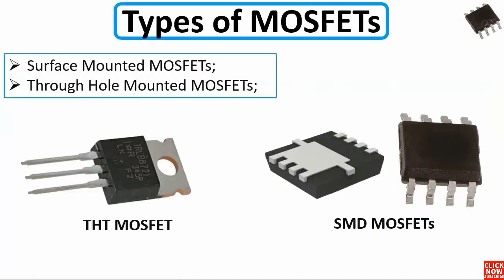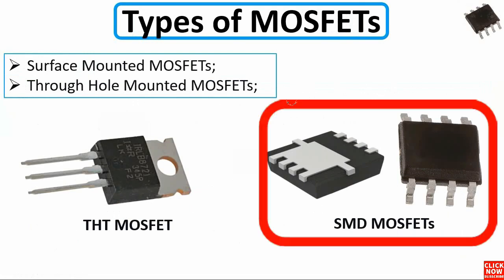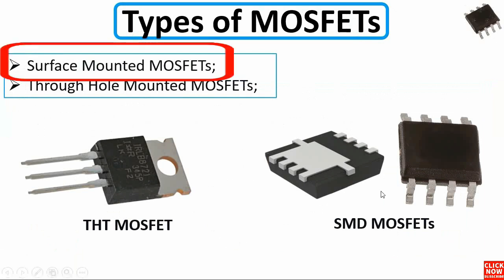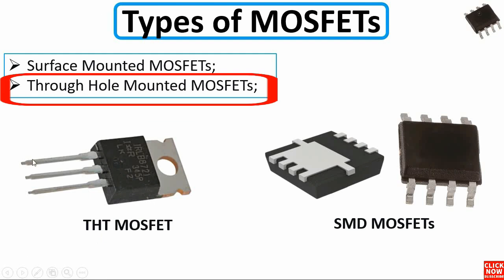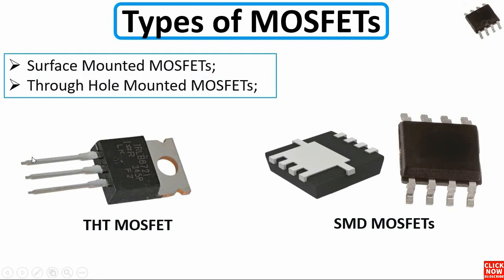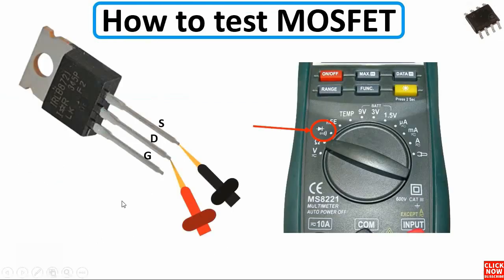As you can see, we have two kinds of MOSFETs. We have SMD MOSFETs or surface mounted MOSFETs, and on the left we have THT MOSFETs or through-hole technology mounted MOSFETs. The working principle of how to test this MOSFET is the same.